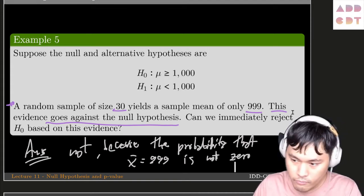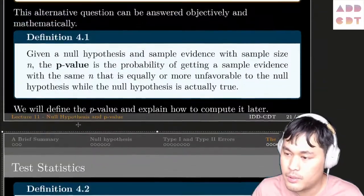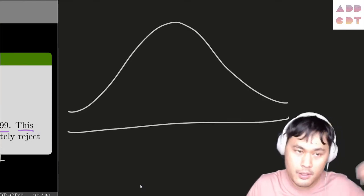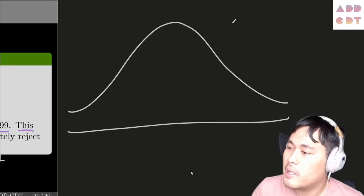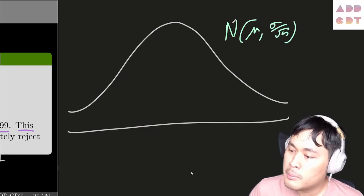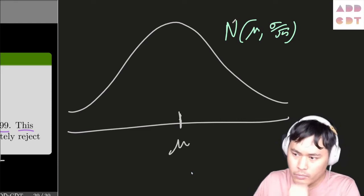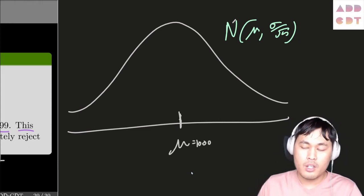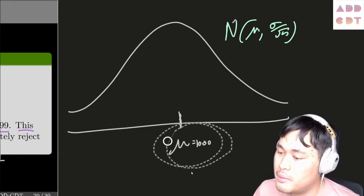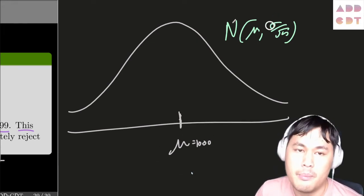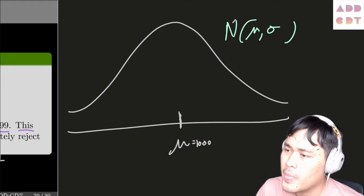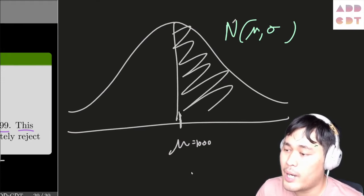Now we are going to revisit the curve we have here. Based on this, we're going to assume that we are dealing with the normal distribution. That means, using this distribution with an average of 1000, and given the standard deviation and sample size, we believe that the average should be on the right inside of this graph.